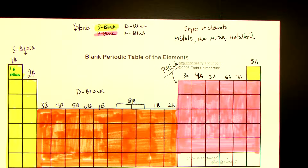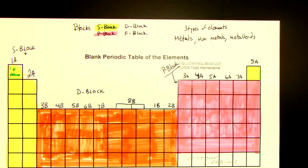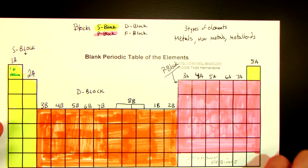Metalloids have a little bit of this and a little bit of that — they're the hybrids, which means they have some metal characteristics and some non-metal characteristics. Our job is to figure out where the metalloids are. If we can color code where the metalloids are, then we understand where the non-metals and metals are. It just happens to be that all the metalloids are in the P-block.